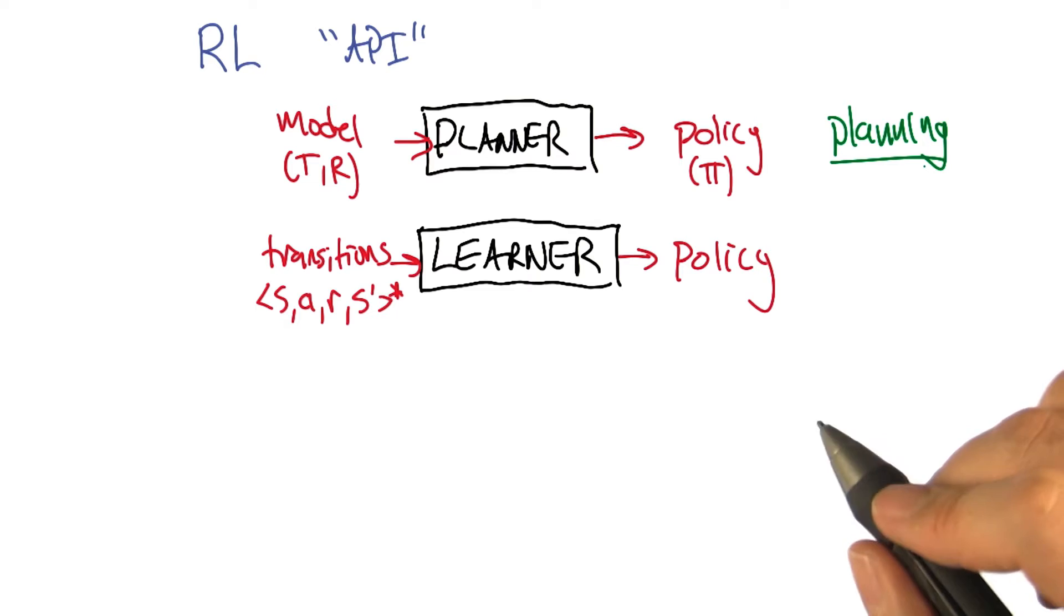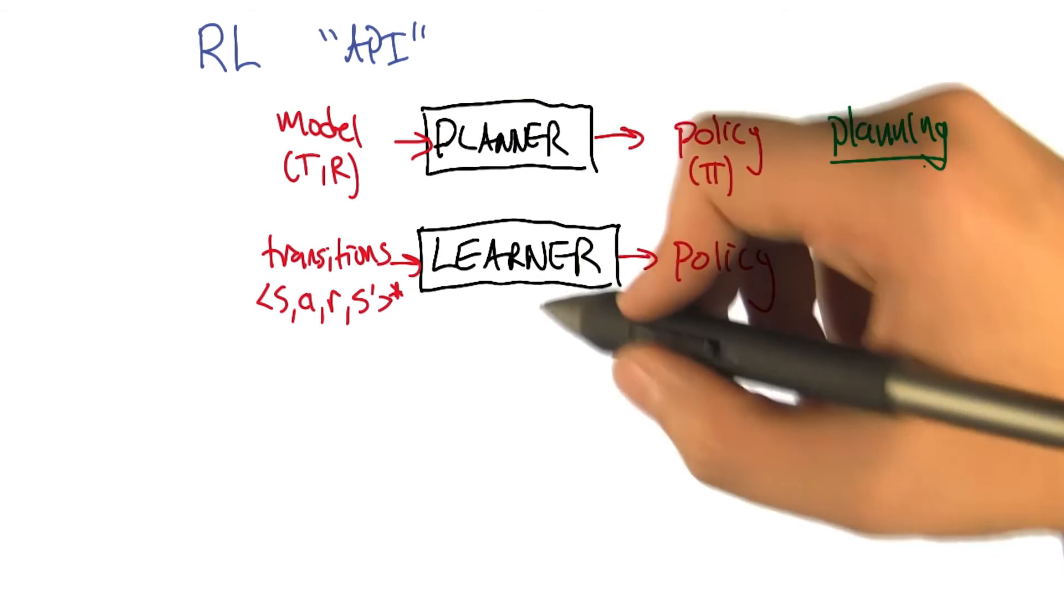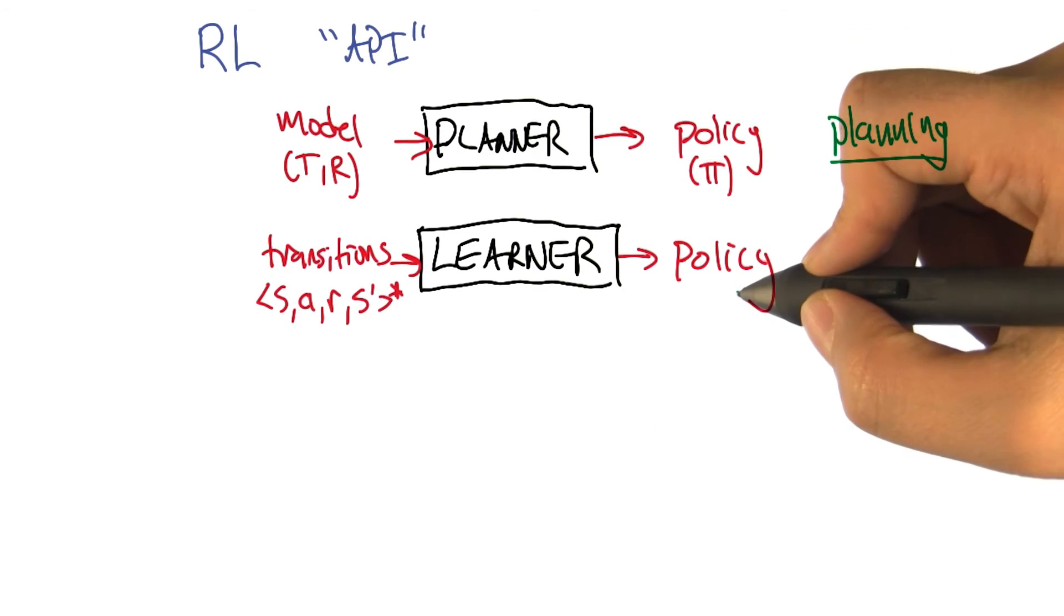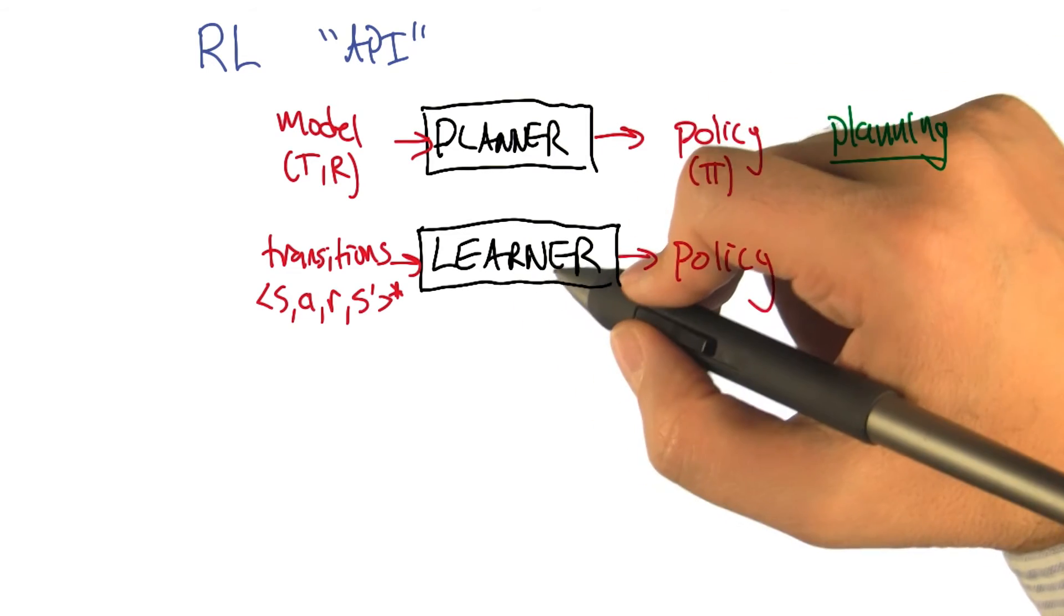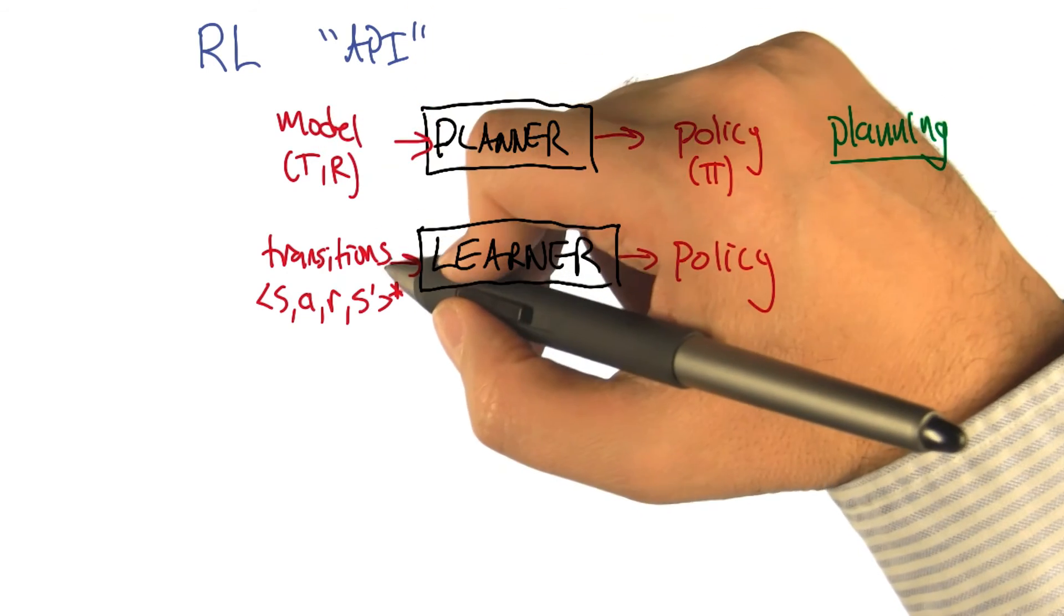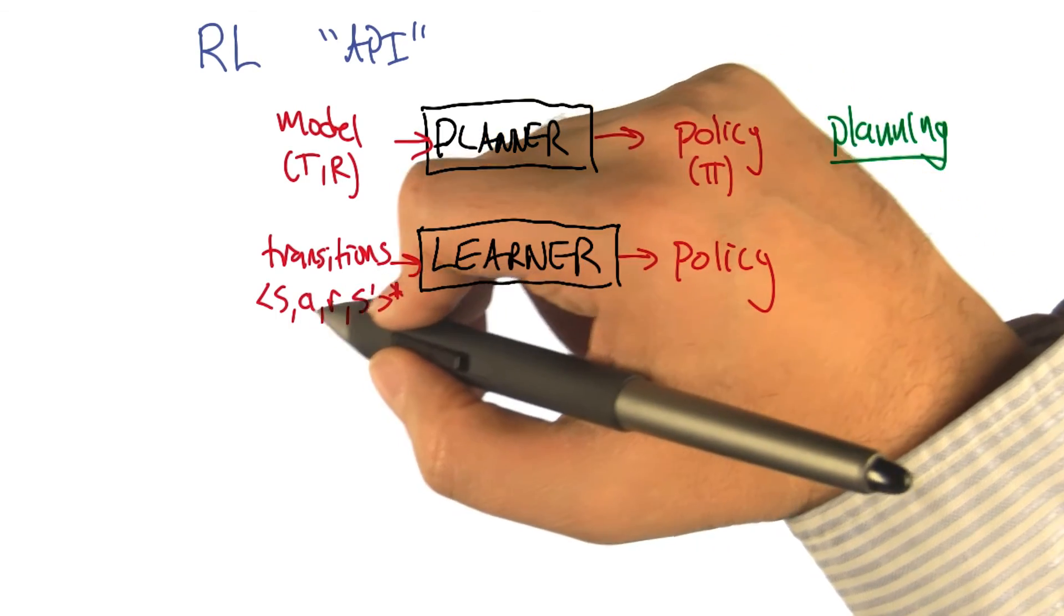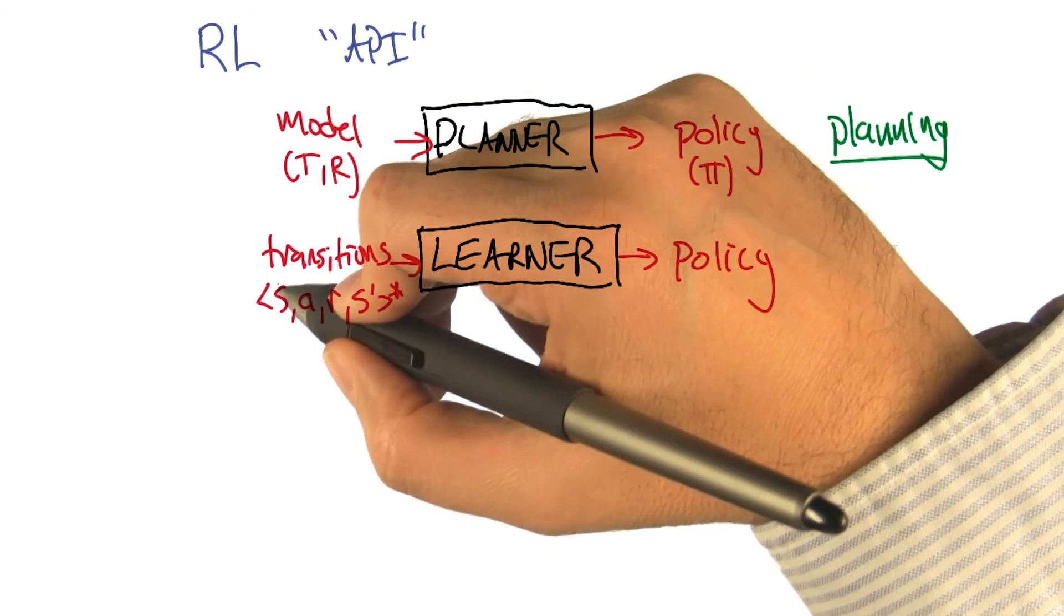Mm-hm. All right, now we're going to talk about a different setup here. We're still interested in spitting out policies, right? Figuring out how to behave to maximize reward. But a learner is going to do something different. Instead of taking a model as input, it's going to take transitions.